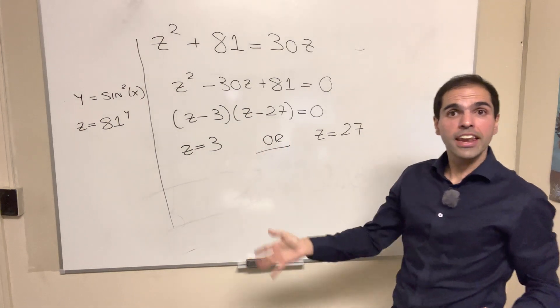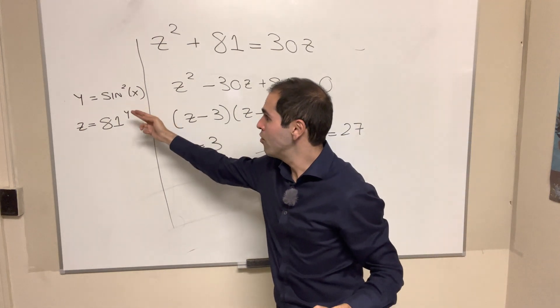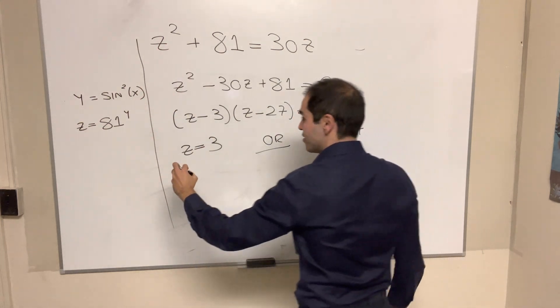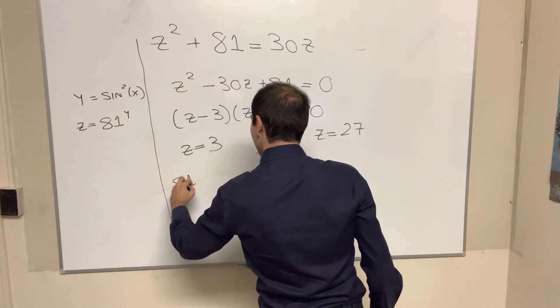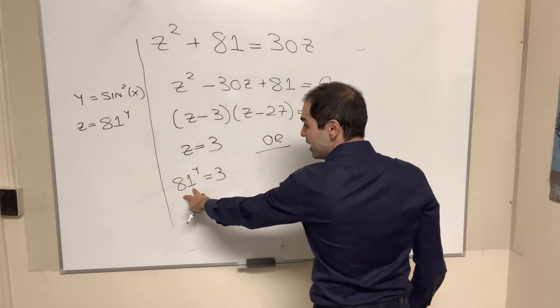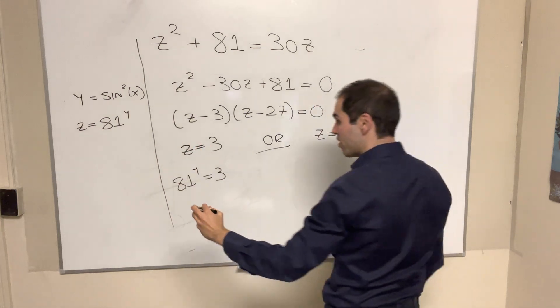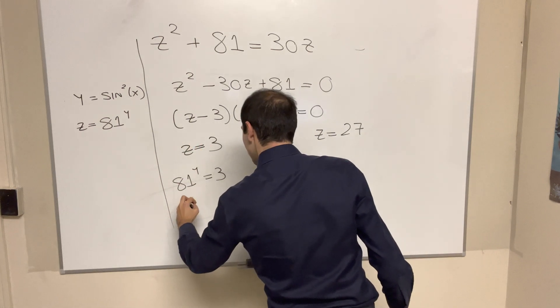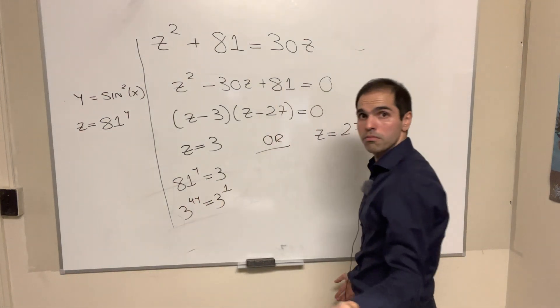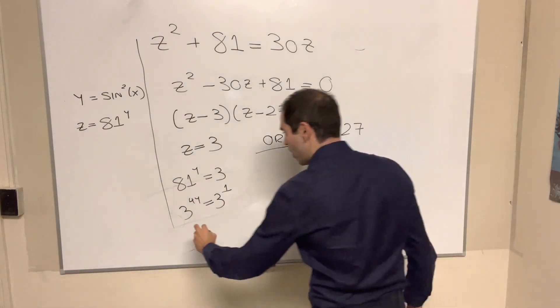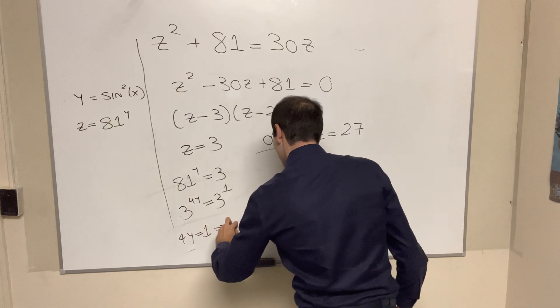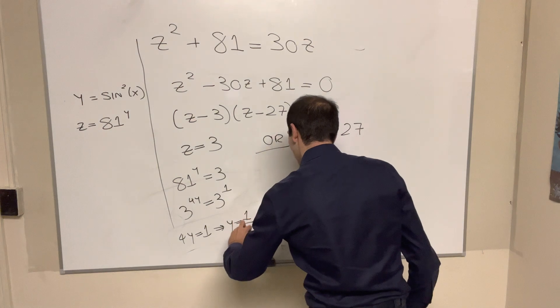So that gives us z, and now we just have to go back and solve for y, and then go back and solve for x. So what we get is 81 to the y equals 3, but then 81 is 3 to the 4th. So 3 to the 4y equals 3 to the 1. So 4y equals 1. So y equals 1 4th.